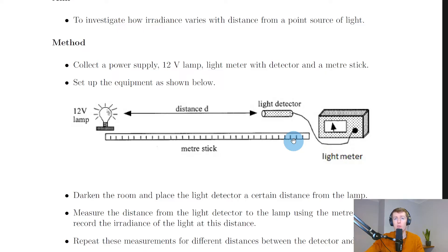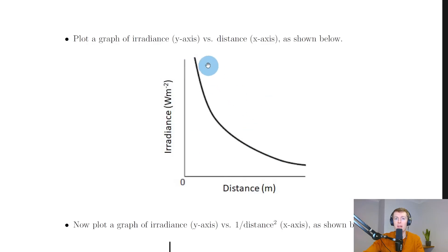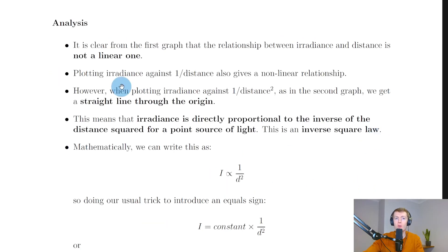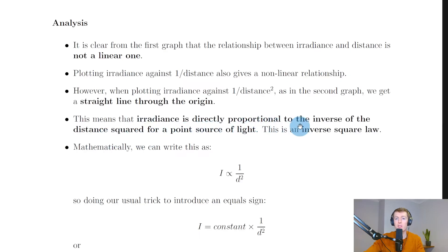To minimise errors, carry out the experiment in a dark room and use opaque material such as black card placed between the light detector and lamp to prevent reflections from the worktop interfering with results. From the analysis: the first graph shows a non-linear relationship between irradiance and distance. Plotting irradiance against one over distance squared gives a straight line through the origin, confirming that irradiance is directly proportional to the inverse of the distance squared — this is the inverse square law.